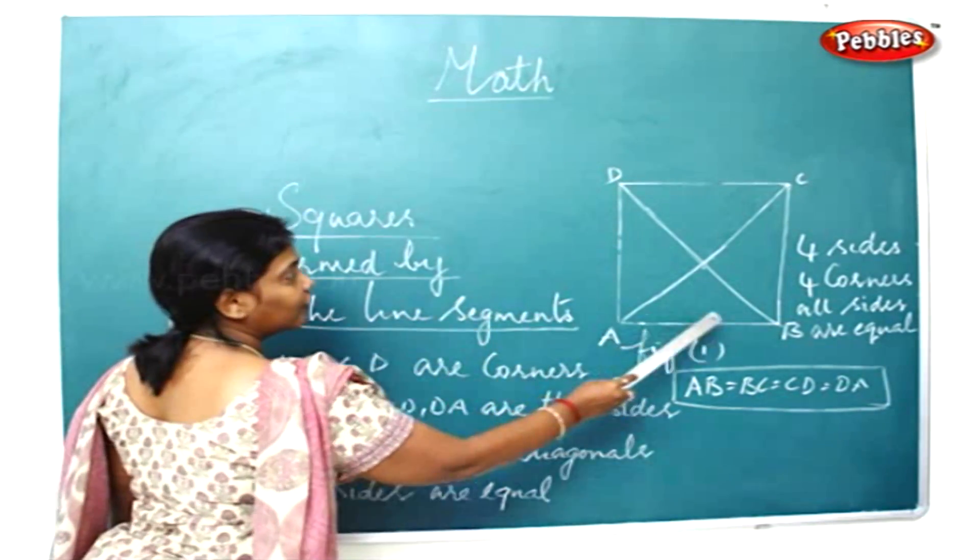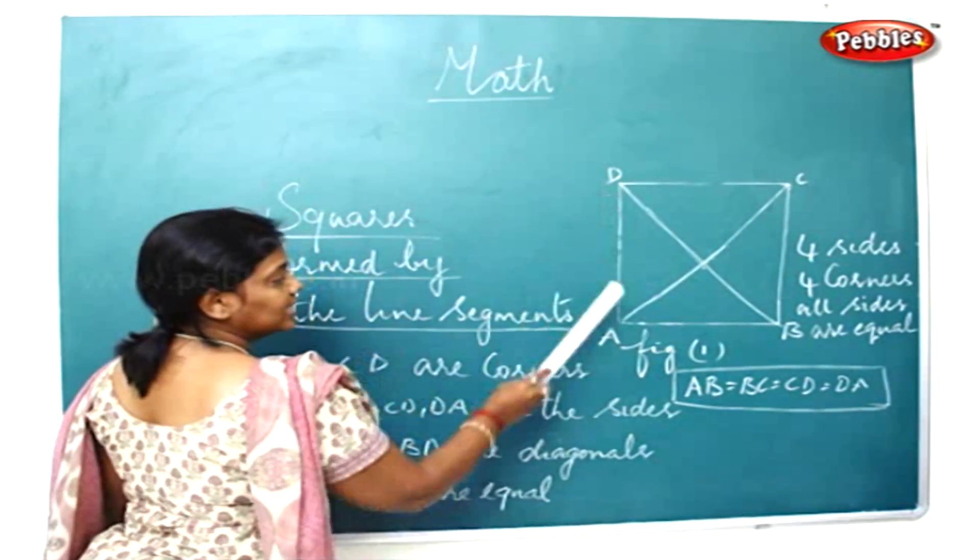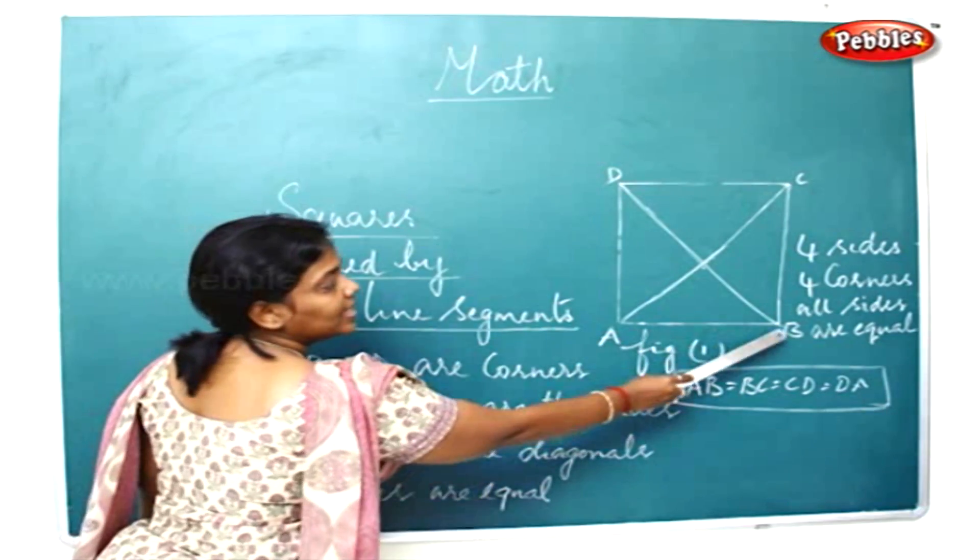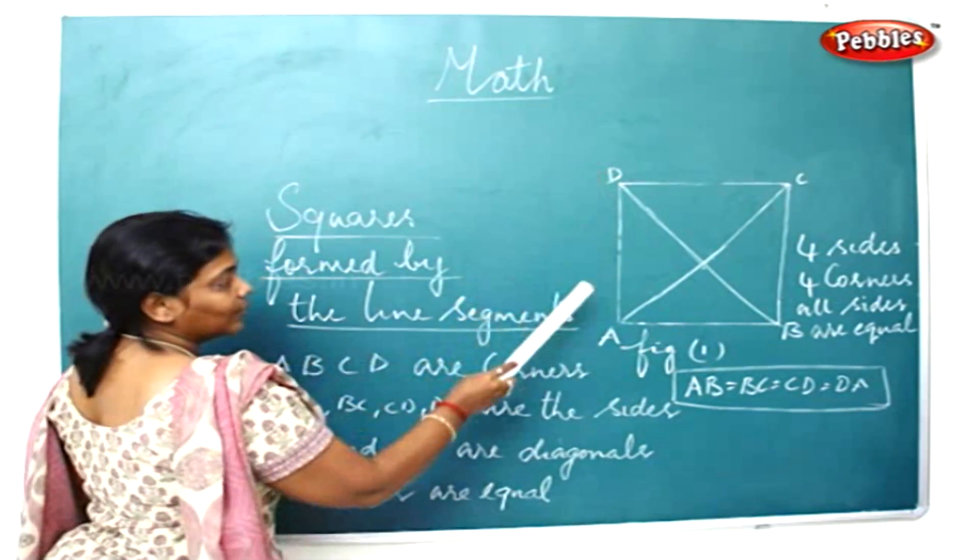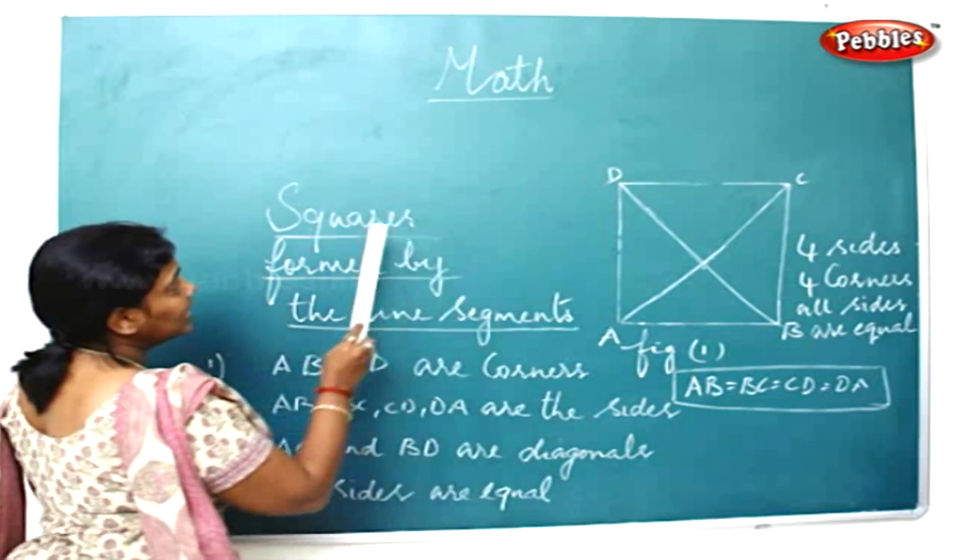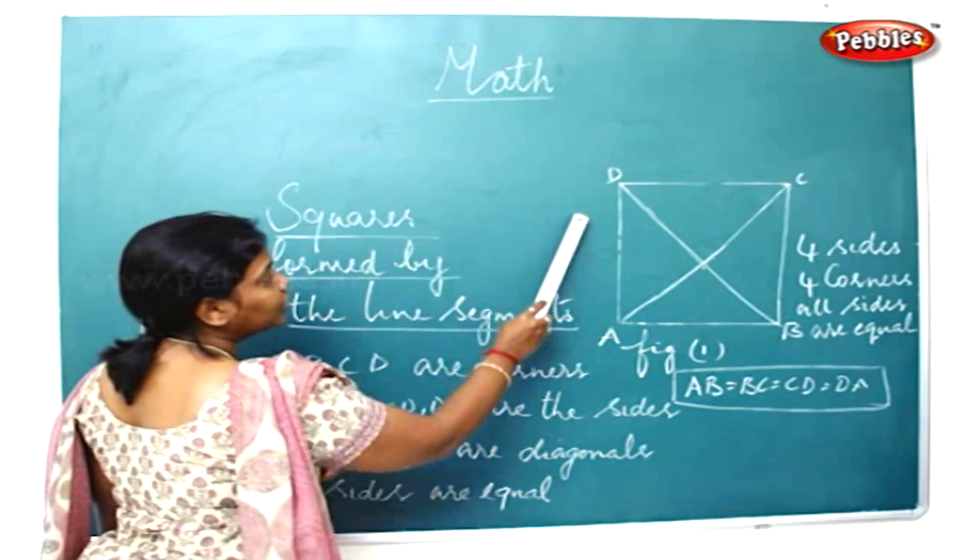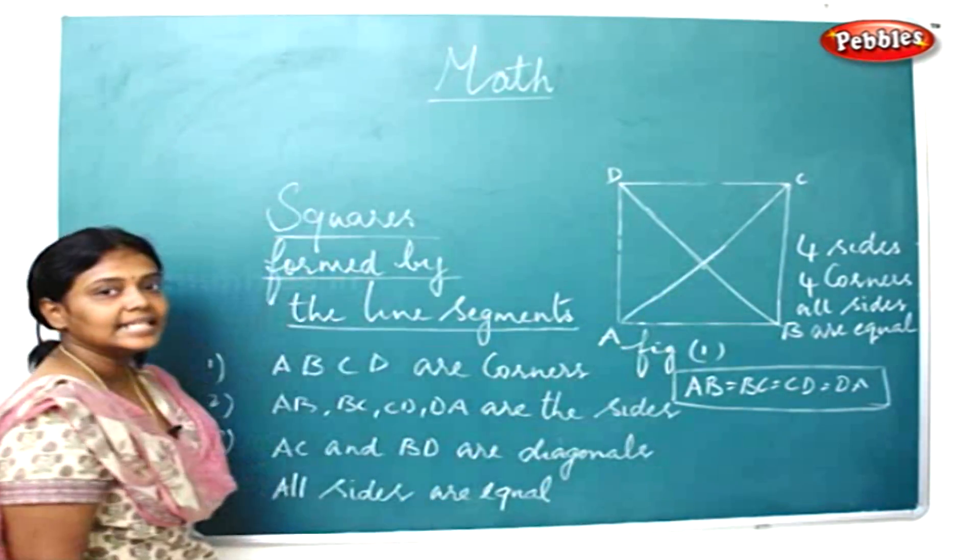If you see, you can see all the four sides are equal. That is, AB is equal to BC is equal to CD is equal to DA. So in a square, we can find all the four sides and corners equal.